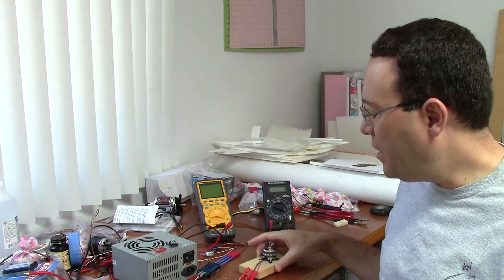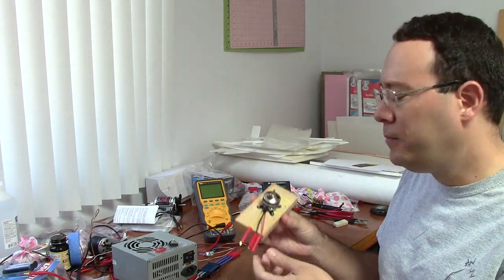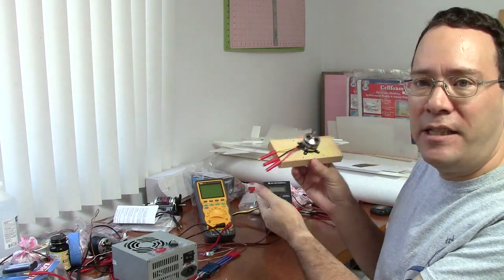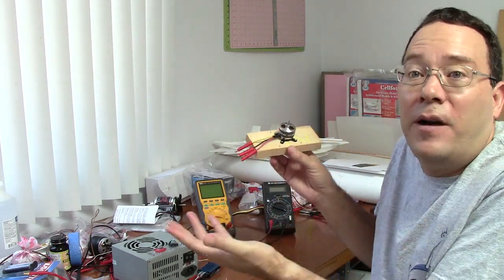When it comes to measuring the motor internal resistance or so-called winding resistance, you might think that you can just take a multimeter, hook it up to two of the connectors, and take a reading of resistance. That's what multimeters are for, one of the things that they do.